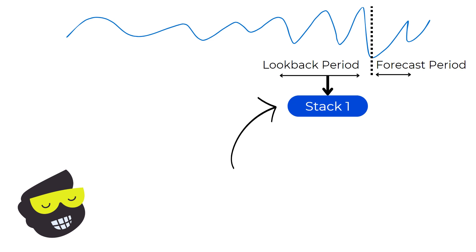After determining the look-back and forecast periods, we start with stack 1. Stack 1 takes the look-back period data and begins processing it to make initial predictions. For example, if our look-back period is the past 24 hours of electricity usage, stack 1 uses this data to forecast the next 24 hours. This initial forecast and the residuals — the differences between the predicted and the actual values — are then passed to the next stack for further refinement.